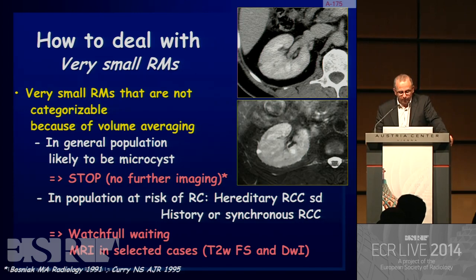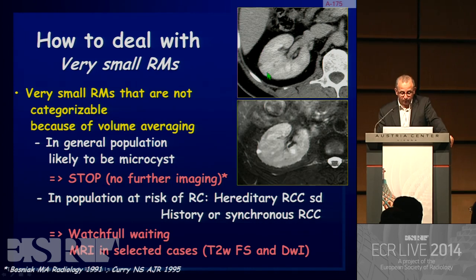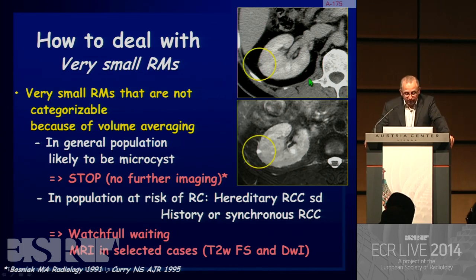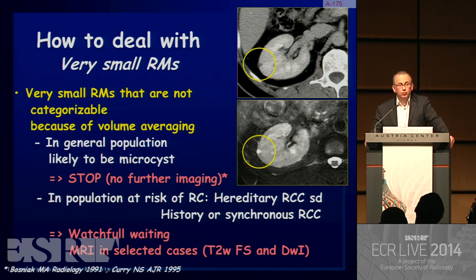How to deal with very small masses? Very small masses below 8 mm are not categorizable mainly because of volume averaging. In a typical situation, such as a man with a previously ablated renal cancer on the left side, in the general population these lesions would be considered microcysts, and typically no further imaging or follow-up is required.